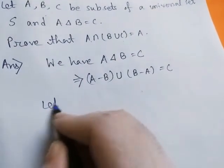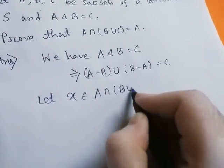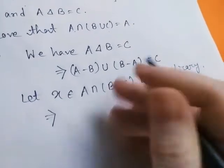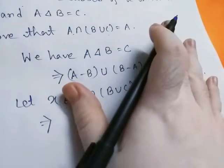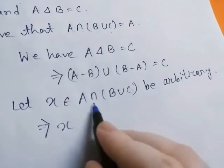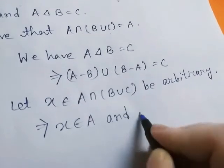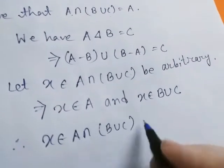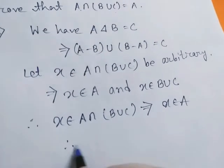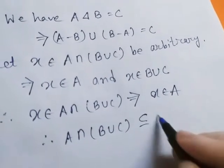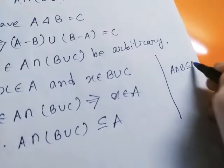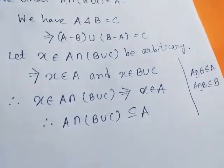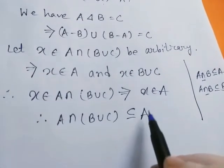We need to prove these two sets are equal. First, to show A∩(B∪C) is a subset of A: let x belong to A∩(B∪C) arbitrarily. This implies x belongs to A and x belongs to B∪C. Therefore x belongs to A. So A∩(B∪C) ⊆ A, because the intersection of two sets is always a subset of each set by definition of intersection.